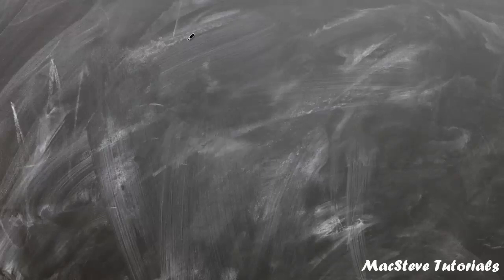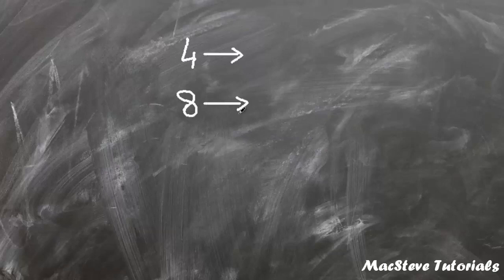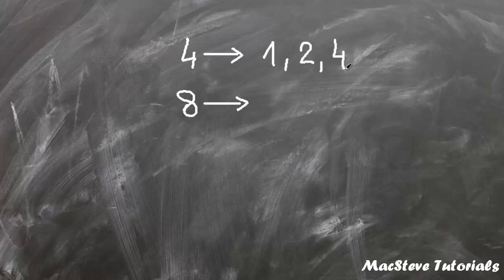In this example we will find greatest common factor for 4 and 8. Factors of 4 are 1, 2 and 4, while the factors of 8 are 1, 2, 4 and 8. So greatest common factor for 4 and 8 is 4.